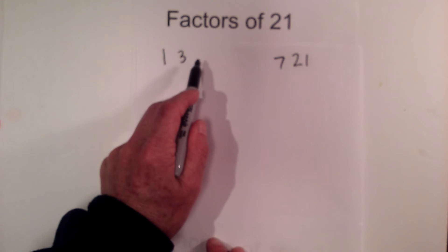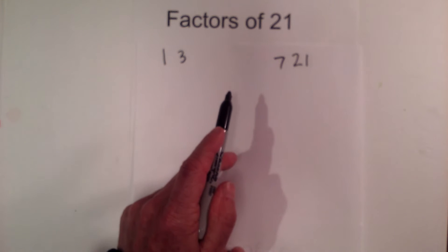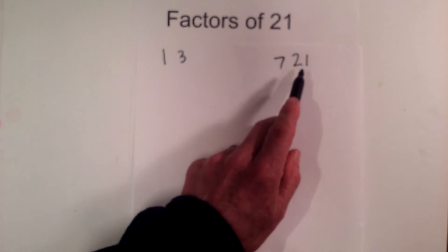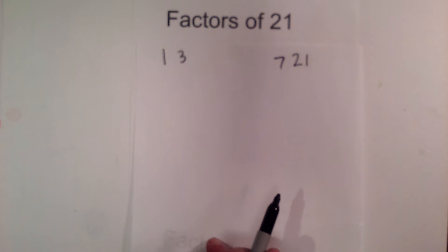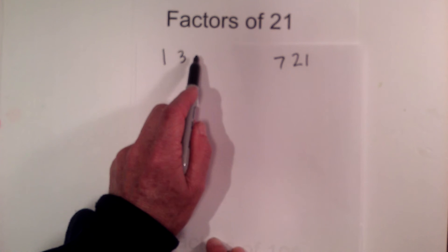4 is next, and 4 does not go into 21 because it jumps from 20 to 24. 5 does not go into 21 because it does not end in a 5 or 0. 6 does not go into 21 because 2 and 3 must go into 21 for 6.